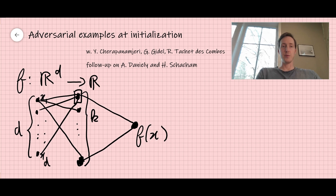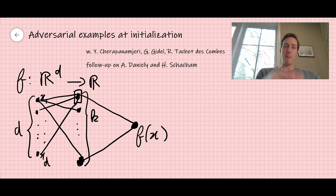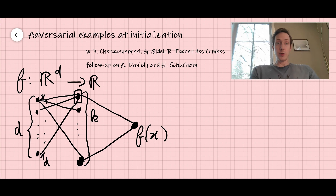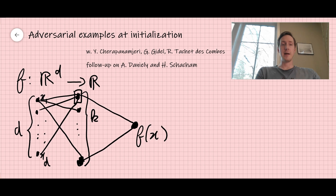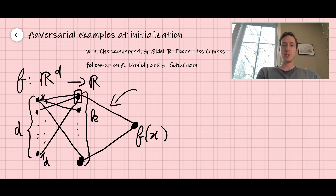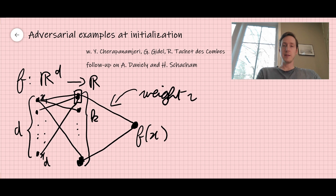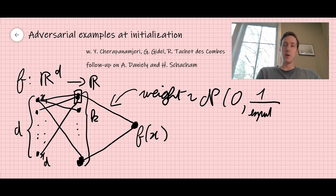I will give a more precise mathematical notation later in the talk. Now, we're going to look at this neural network at random initialization. Those edges have weights — the output is a weighted combination of the input. The weights at initialization are random, Gaussian, centered, zero mean.